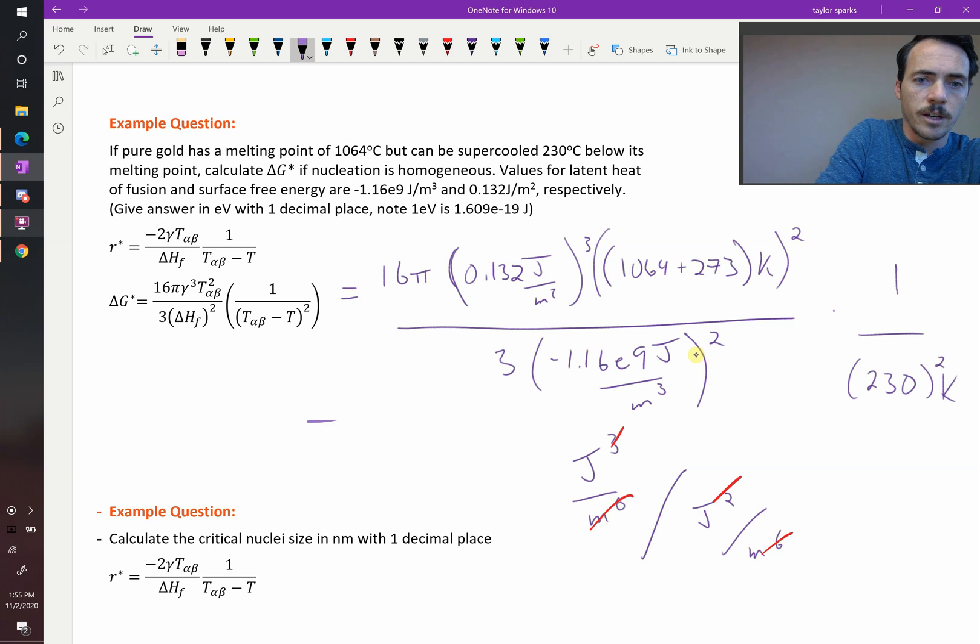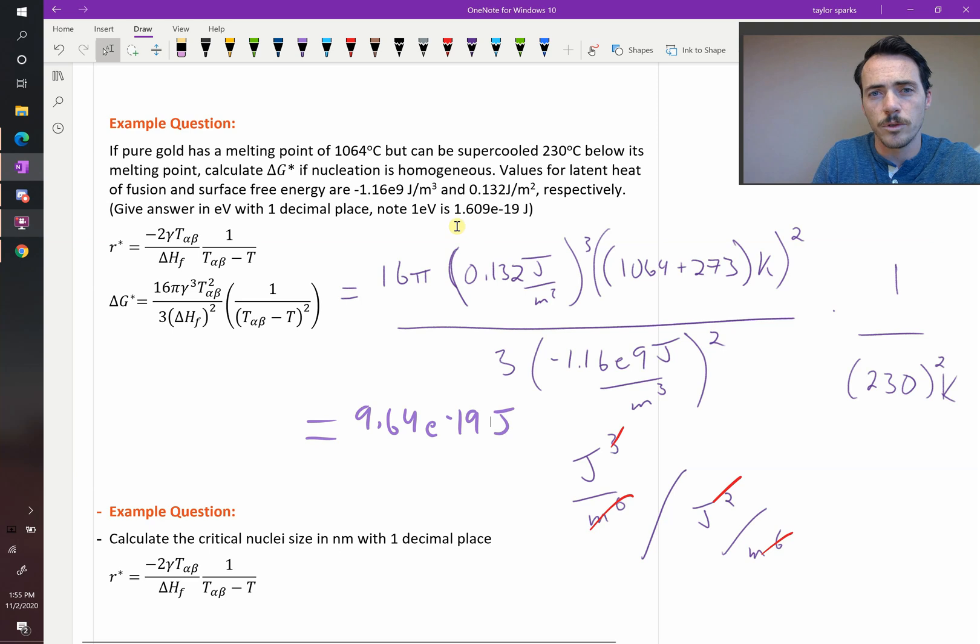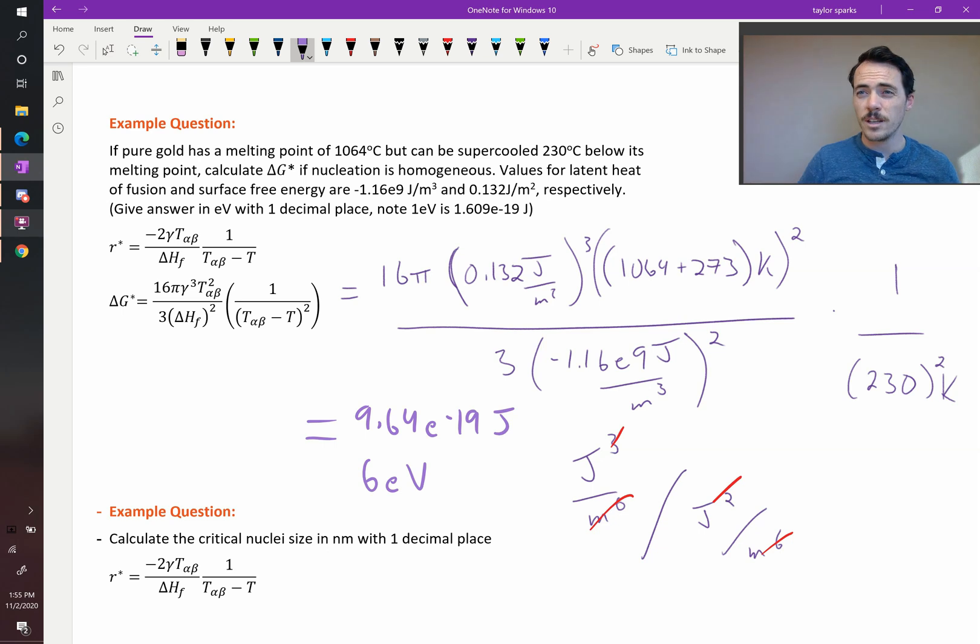When I plug it into my calculator, I get the following: I get 9.64 times 10 to the negative 19 joules. We can go ahead and convert that to electron volts using this conversion factor right there, and I find that it's equal to about 6 electron volts. That's a pretty big activation energy, right? 6 electron volts.